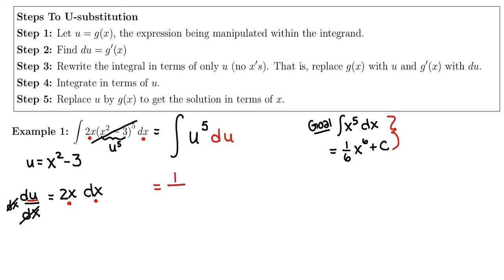We're going to take the antiderivative of u to the fifth. So 5 plus 1 is 6. So 1 over 6, u to the 6 plus k.